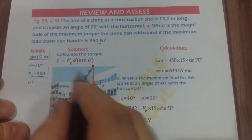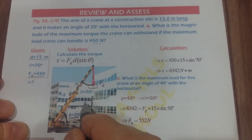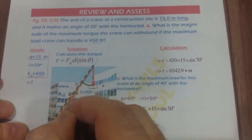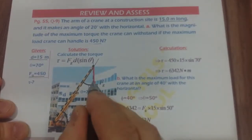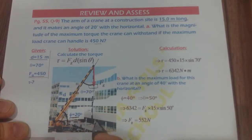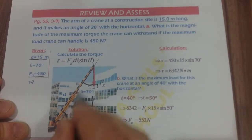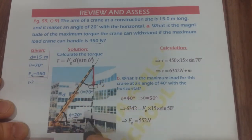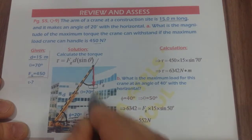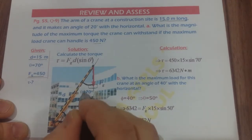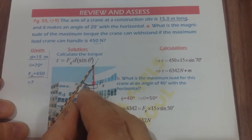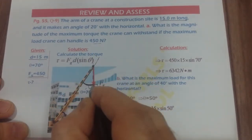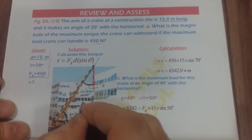Before calculating the torque, we need to find the angle between the distance and the force. The given angle is between the crane arm and the horizontal, not the angle between the distance and the force. Since the angles in a right triangle must sum to 90 degrees, the angle between the distance and the force must be 70 degrees.